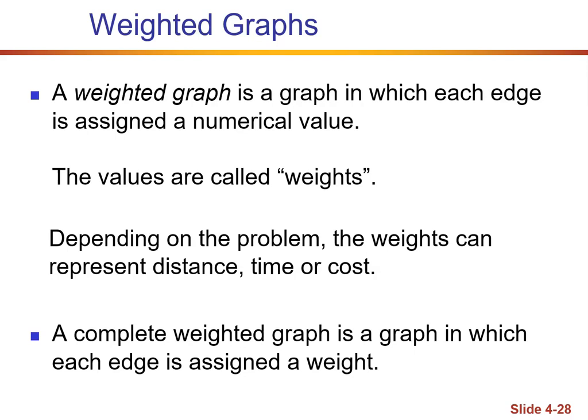How can we figure this out? With a weighted graph. We've talked about complete graphs, but now we have a weighted graph. The traveling salesman was going from all the different cities with a cost associated from going from city A to B, different than the cost of going from A to C. Each edge is assigned a numerical value — that value could be in terms of time, cost, distance, all different types of things. A completed weighted graph is a graph in which each edge is assigned a weight.